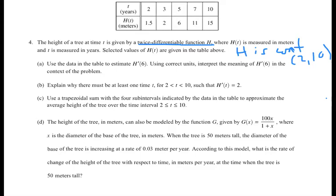This says use the table to estimate h prime of 6. So 6 is between 5 and 7. This is a derivative problem, so h prime of 6 is approximately, we're going to use slope. 11 minus 6 over 7 minus 5. That is fine for the answer. You do not have to solve that.